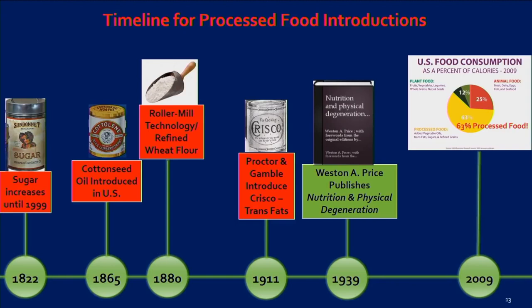So what about processed food during this time? From 1822 to 1999, sugar consumption was rising — up 17-fold. Nutrient-deficient food: cottonseed oil, our first vegetable oil, was introduced right after the American Civil War around 1865–1866. We got roller mill technology, which created refined white wheat flour — a nutrient-deficient food — in 1880. In 1911, Procter & Gamble introduced Crisco, the first trans fats. So those are our four processed foods.